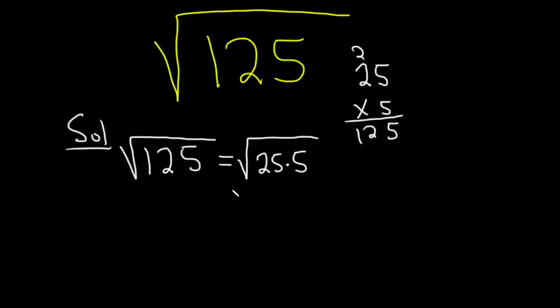And then we can break this up into a product. This is the square root of 25 times the square root of 5. And the square root of 25 is 5. This will be 5 square root of 5.